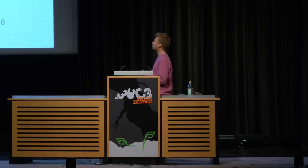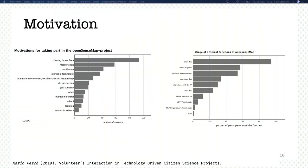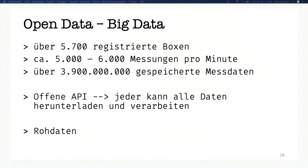You can also see this from the main usage of OpenSenseMap. Most people just want to share their data, measure data, and participate — but in the end they just look at their own data, create diagrams and add sensors, and play with the boxes. Analysis of data through interpolation, for example, is a very low priority and is not used a lot.